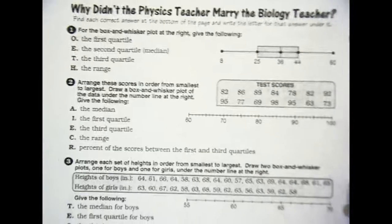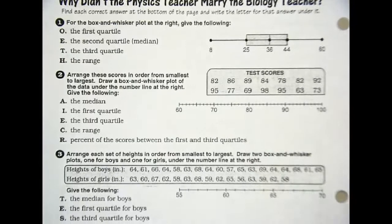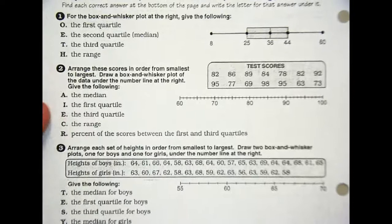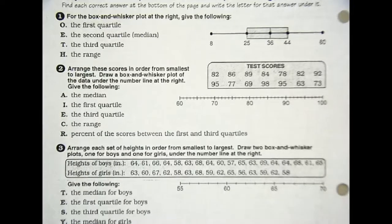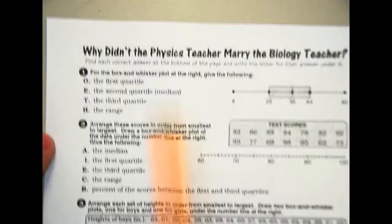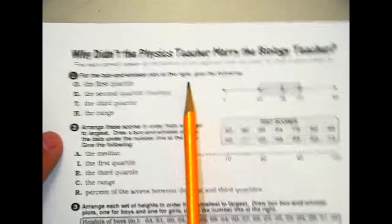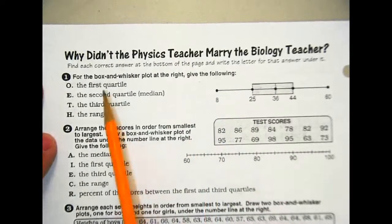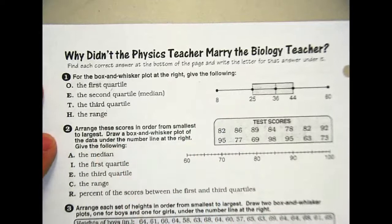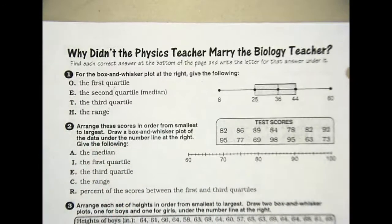Want everyone to turn it over? Pause where you're at. I know some of you are deep into work, but turn it over. The other side's a little more confusing, I think, because box and whiskers just are things that you're not used to using. They're not terribly difficult, but you're not used to using them necessarily. So number one, for the box and whisker plot at the right, give the following. The first quartile, second, third, and range. I want everyone to do that right now.